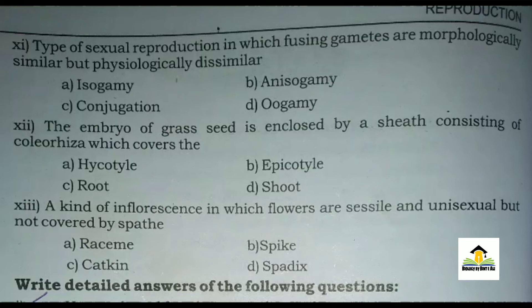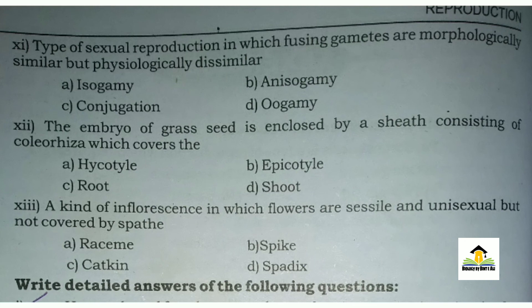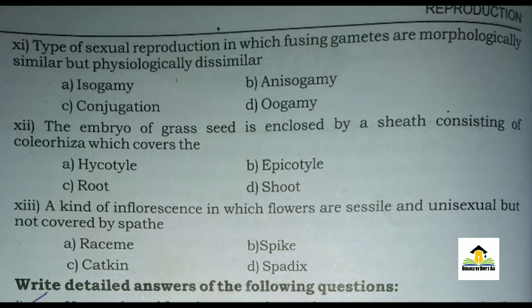...A: isogamy, B: anisogamy, C: conjugation, D: oogamy. The right answer for this MCQ is B: anisogamy. MCQ number twelve: The embryo of grass seed is enclosed by a sheath called coleorhiza, which covers the — A: hypocotyl, B: epicotyl, C: root, D: shoot.